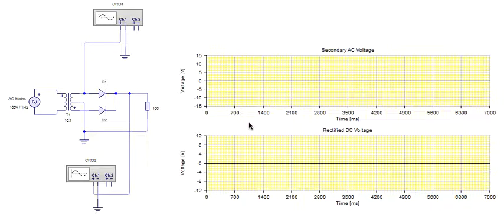Now friends, this is the circuit of a full wave rectifier. Here two diodes are used, and one CRO, CRO number one, is connected to monitor the AC voltage coming from the secondary of this transformer.